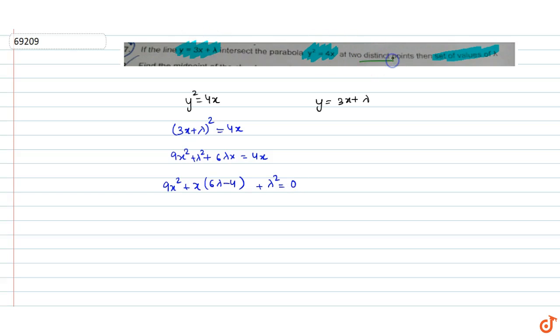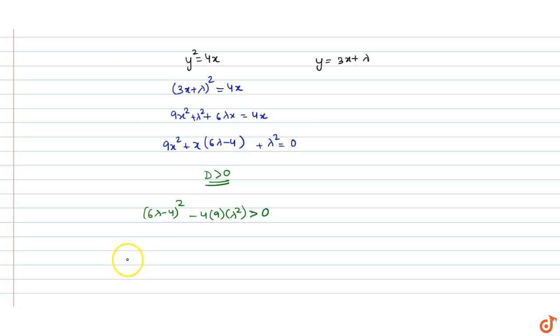Two distinct points means the discriminant should be greater than 0. The discriminant would be 6 lambda minus 4 whole square minus 4 into 9 into lambda square is greater than 0. That would give us 36 lambda square plus 16 minus 48 lambda minus 36 lambda square is greater than 0.